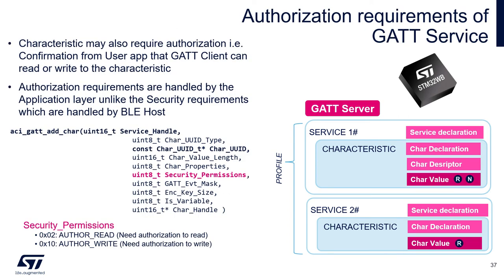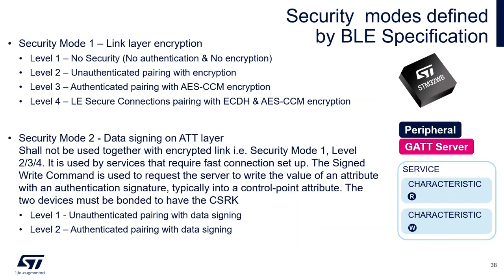A characteristic value can also require authorization by the user application before it can be read or written. This is handled on the user application side, unlike security requirements which are handled by the BLE stack. Looking at the BLE specification, there are definitions of security modes and security levels. Security mode 1 is the link layer security — everything we have discussed so far.